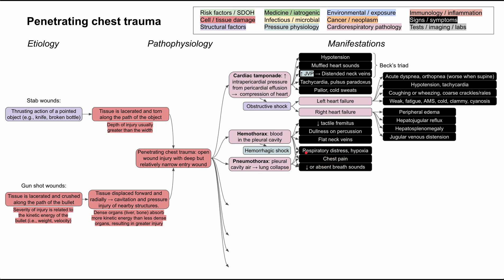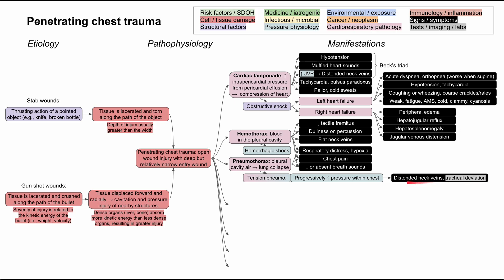Pneumothorax has similar symptoms to hemothorax: respiratory distress, hypoxia, chest pain, and decreased or absent breath sounds because the lung is collapsed. In severe cases, it can become a tension pneumothorax — a one-way valve from the lung to the pleural space — where every breath traps more air, progressively squeezing the lung collapsed and building tension. This causes tracheal deviation as pressure increases on one side, pushing the trachea to the other side, and distended neck veins because pressure makes it hard for blood to return to the right heart.